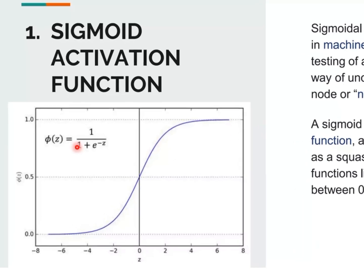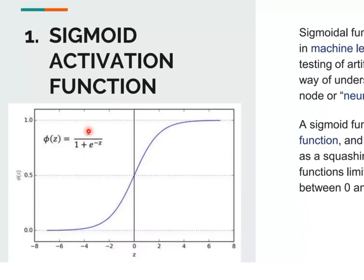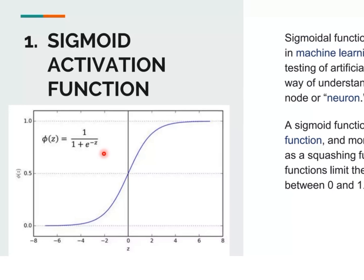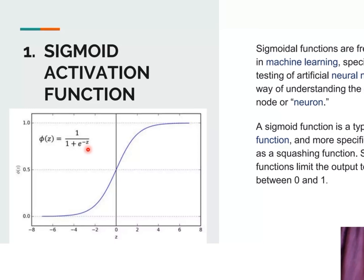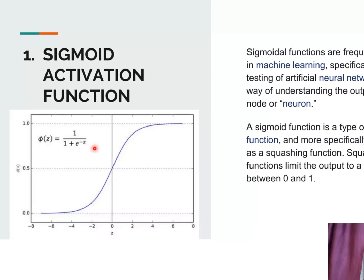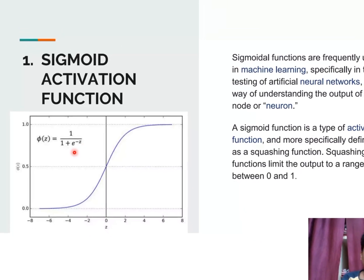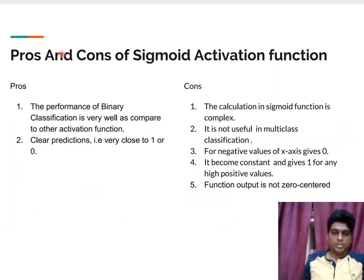The first thing is the sigmoid activation function it is represented by φ(z) that is equal to 1 divided by 1 plus e to the power of minus z. It is a function that we obtain during training the model. Here it is mainly used in the machine learning concept especially in testing the ANN that helps to understand the output of neuron pros and cons. Performance of the binary classification is very well compared to other activation methods but the calculations here is very complex and also this method does not help in multi-class classifications. It provides the output value as 0 when we obtained a non-positive or a negative value and for high positive values it produces the output as 1.